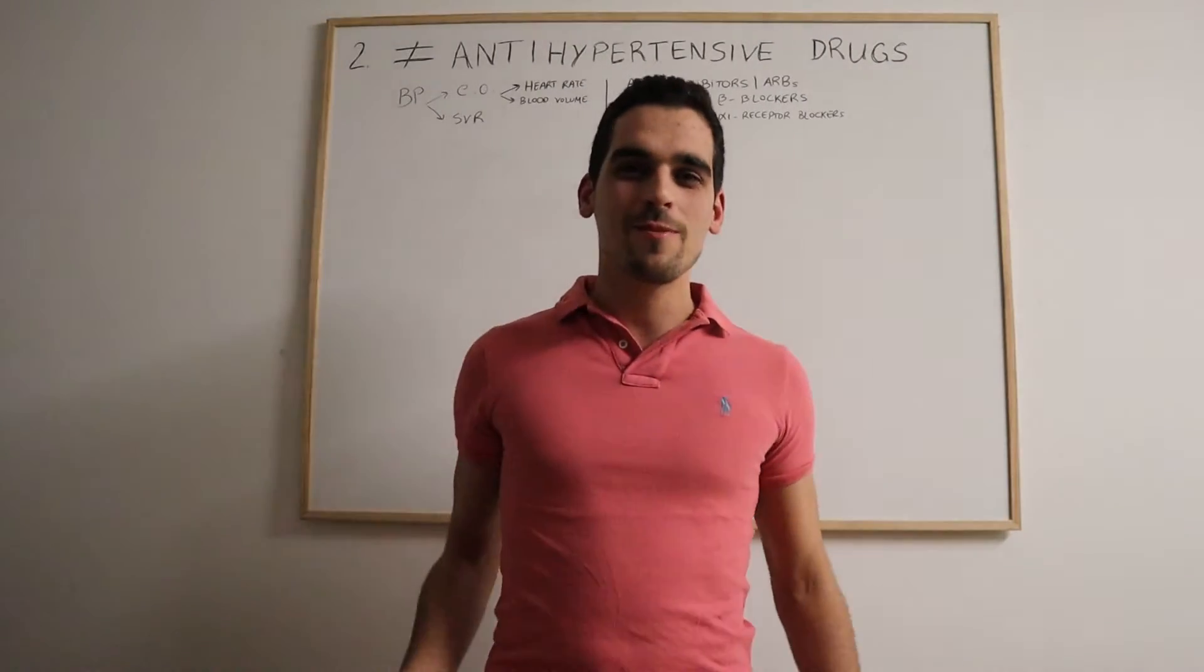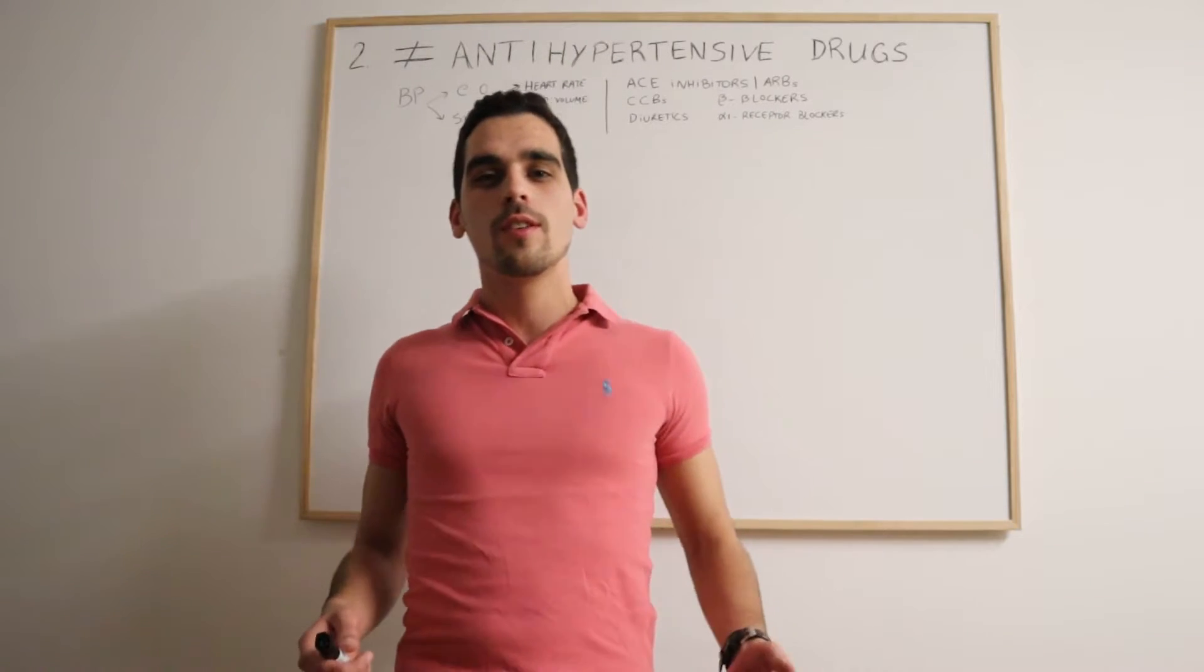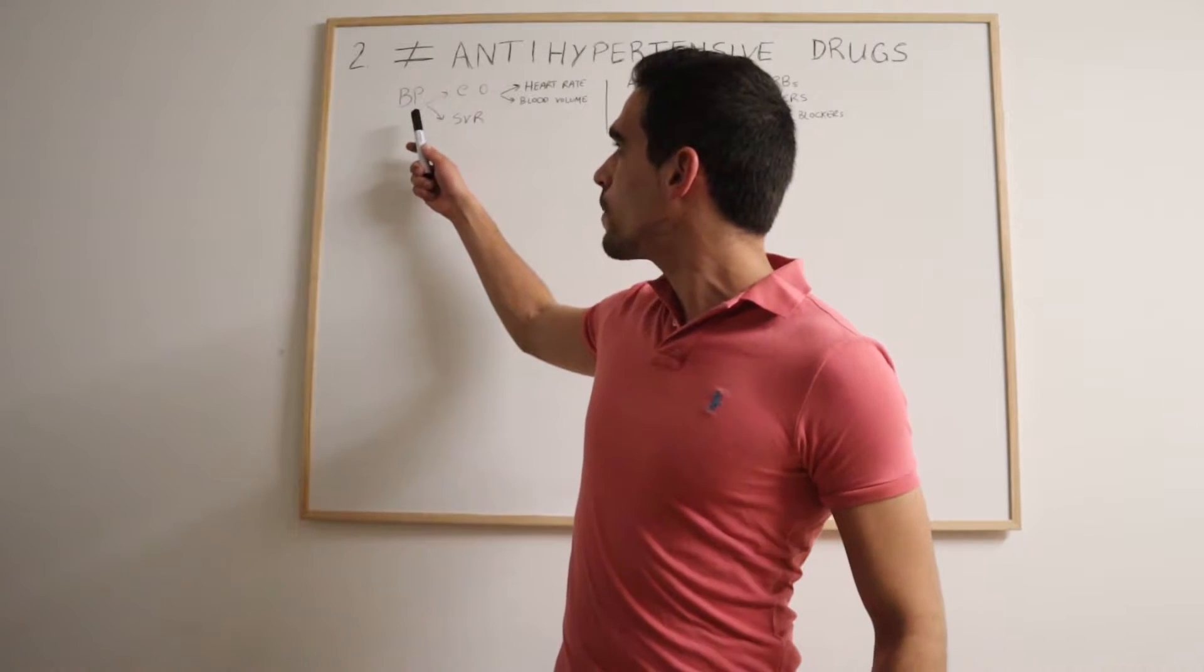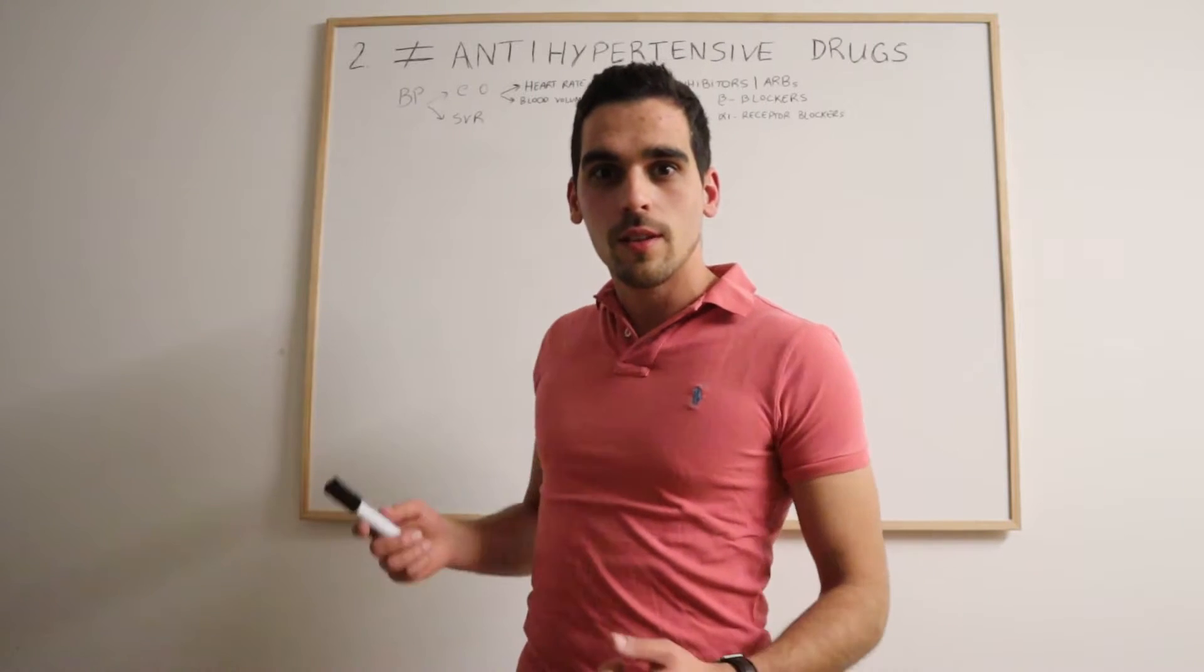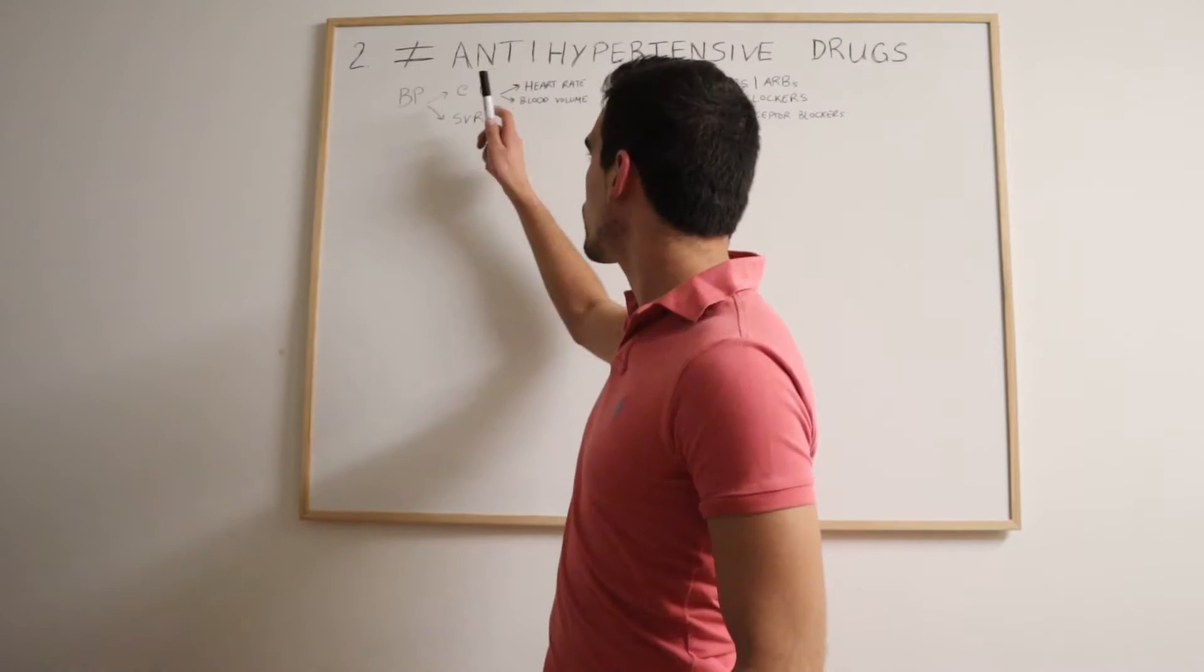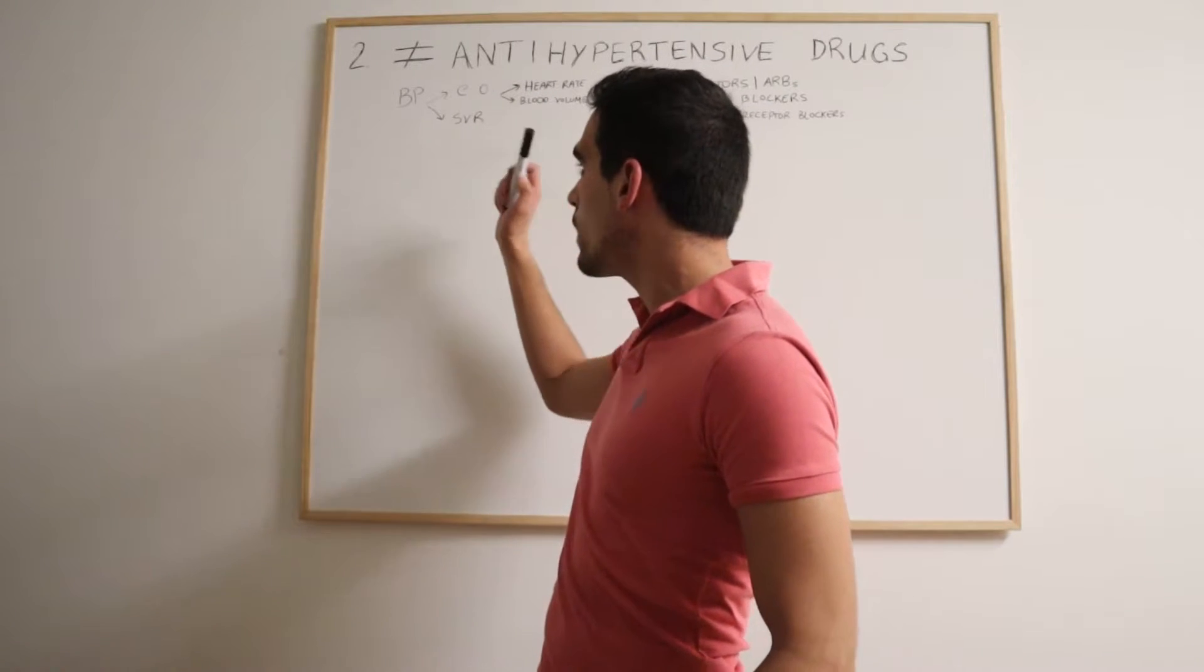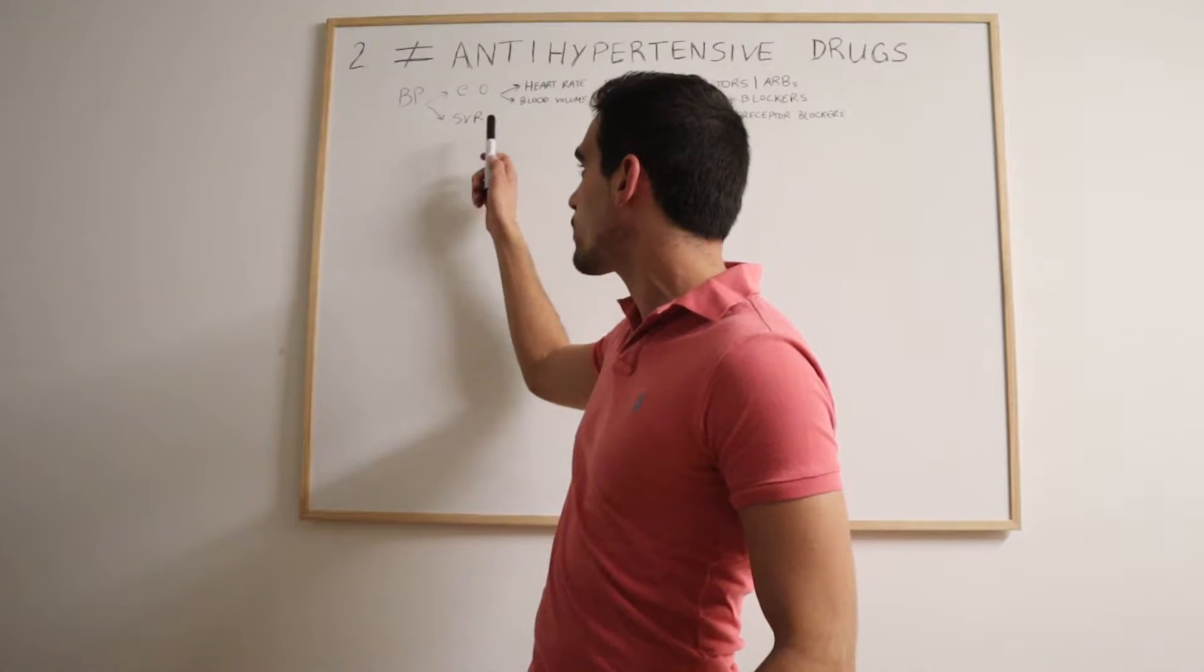Hello again and welcome to Easy Peasy Pharmacology. In the last video we talked about the factors that impact blood pressure. We've seen that blood pressure is dependent on the cardiac output, which depends on the heart rate and the blood volume, and also on the systemic vascular resistance.